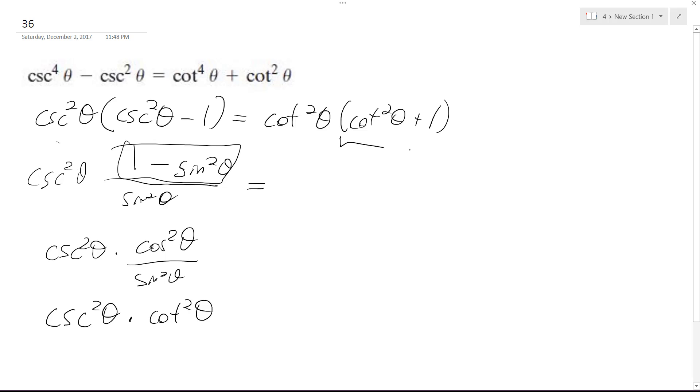And over on the right, I'm going to convert this so we get our proof. So I get cosecant squared theta plus sine squared theta all over sine squared theta.